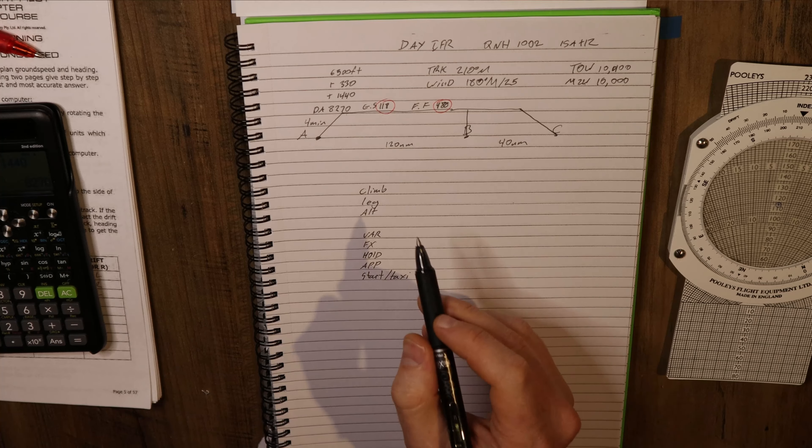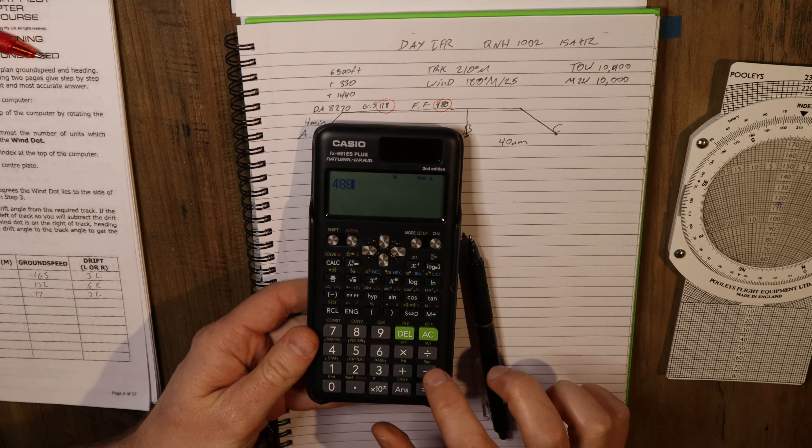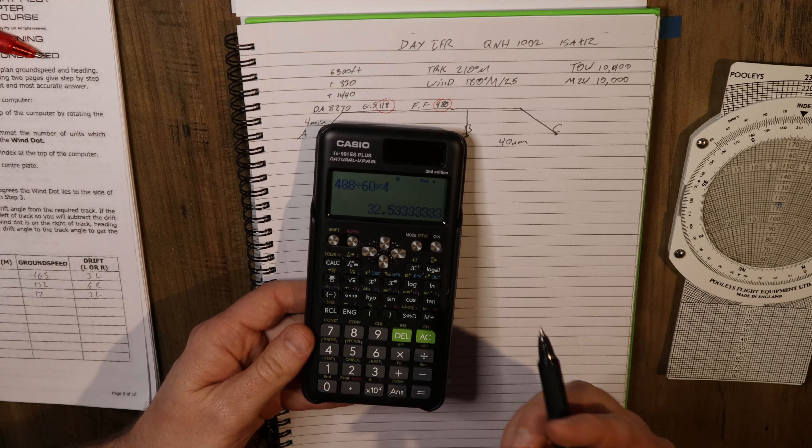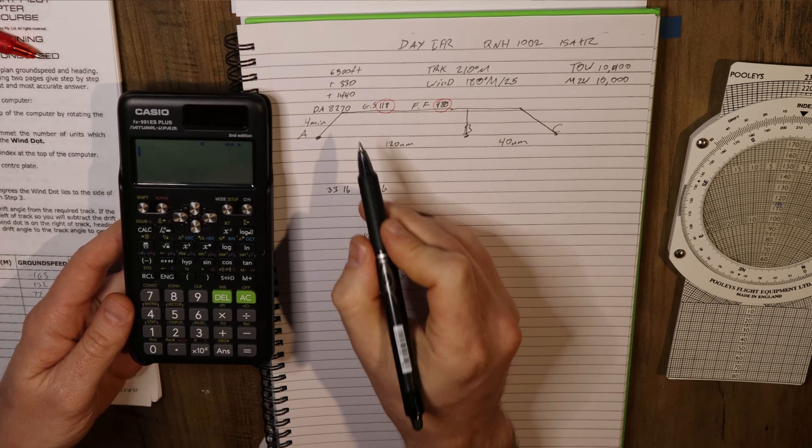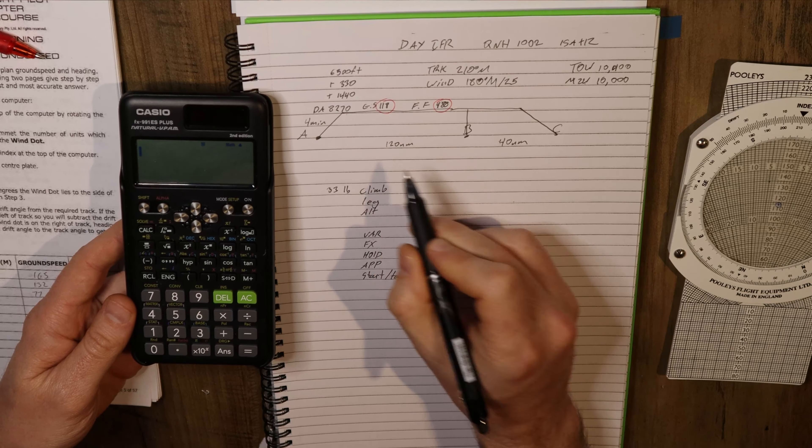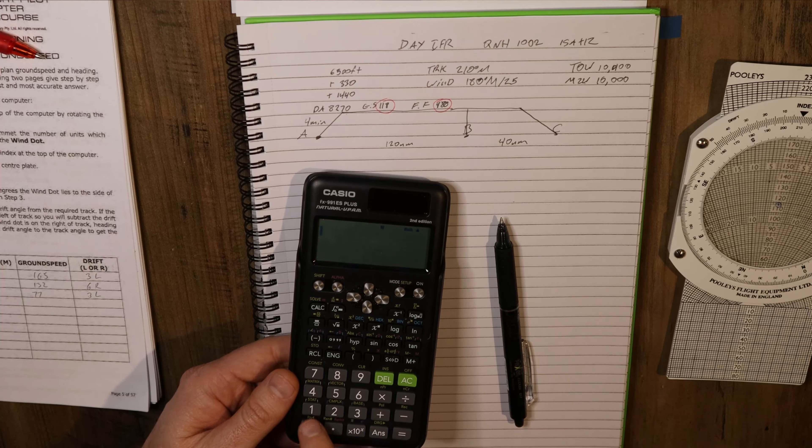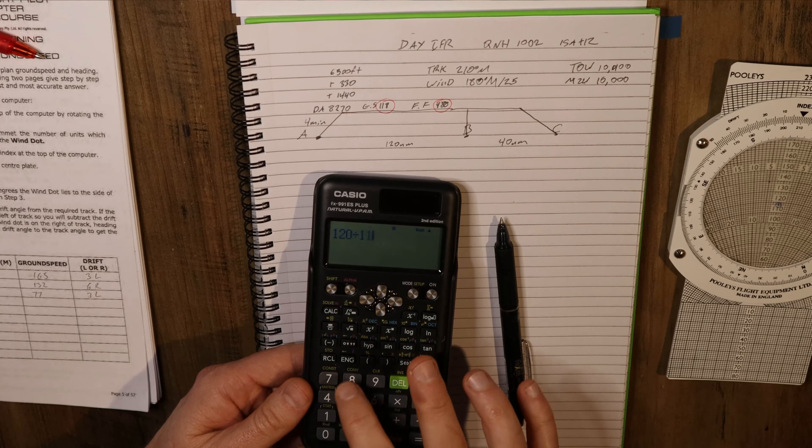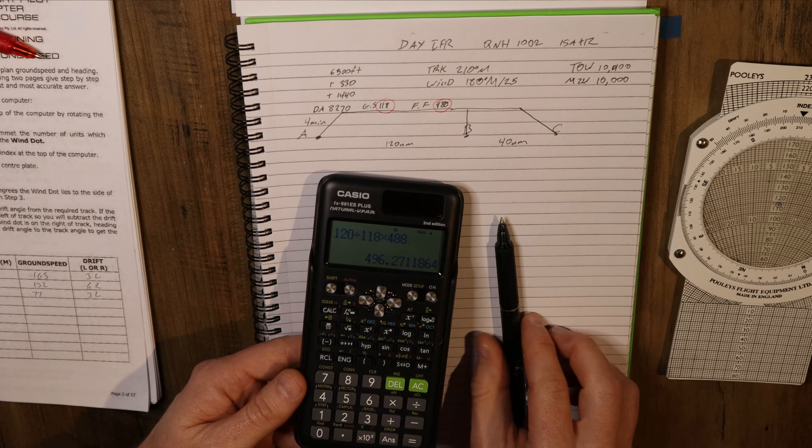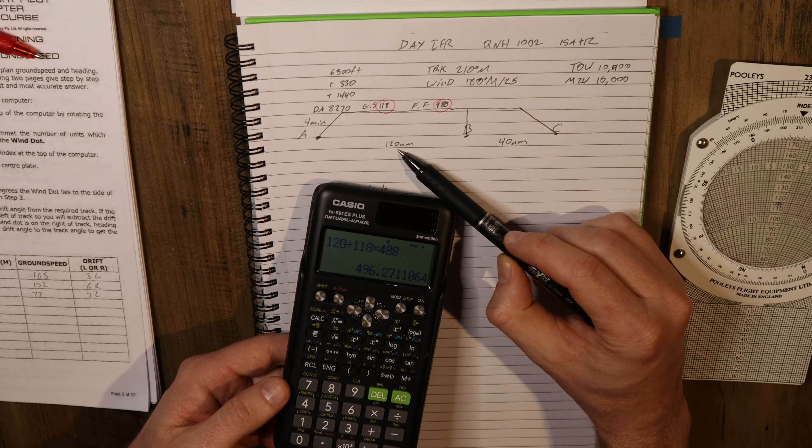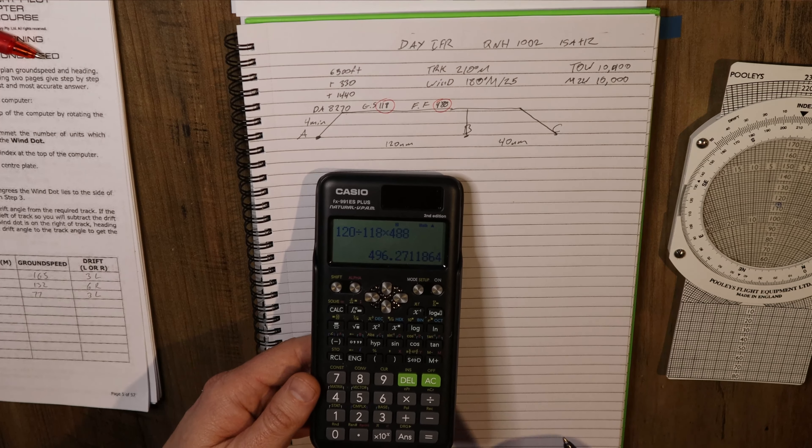Let's look at our variable fuel for the climb. We've got a fuel flow of 488 and a climb of four minutes. So our easiest way to do that is to go 488 divided by 60 times 4 minutes, gives us 32.5, so we're going to round up to 33 pounds. Now our leg fuel from point A to point B is 120 nautical miles at 118 at 488 pounds per hour. So we're going to go distance first: 120 divided by 118, should be very close to an hour, times 488, which means it should be very close to 488. So 496, and that makes sense because our distance is slightly more than our ground speed.